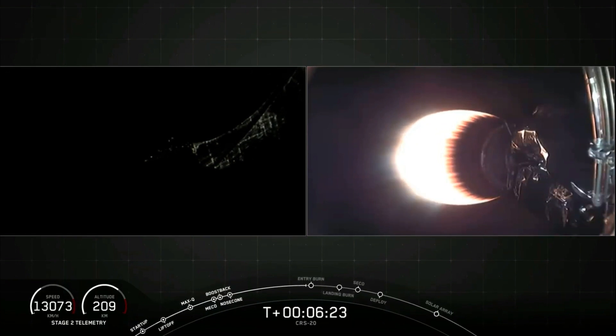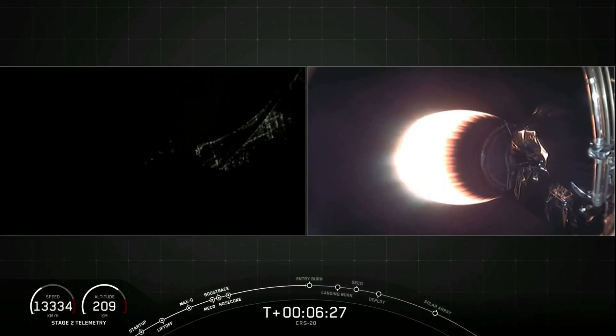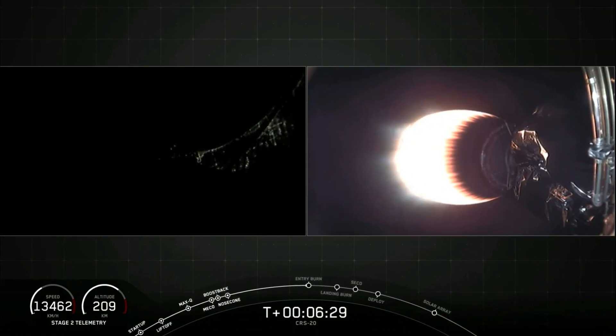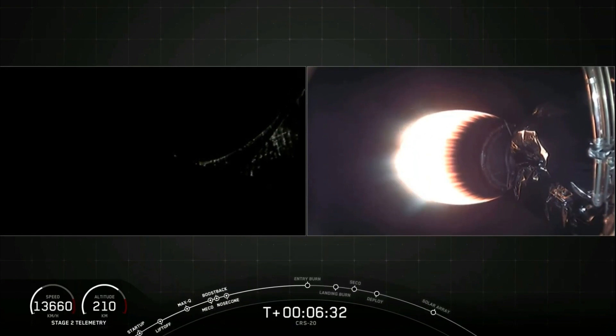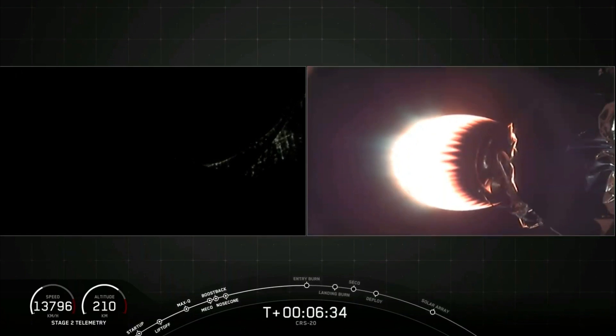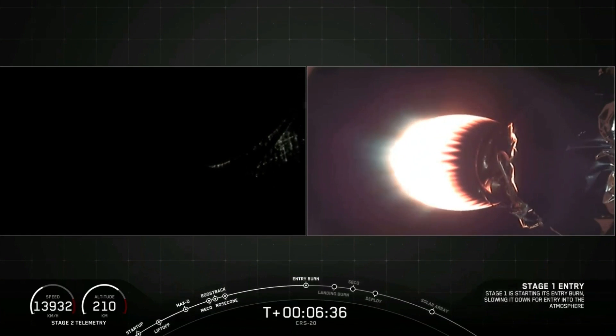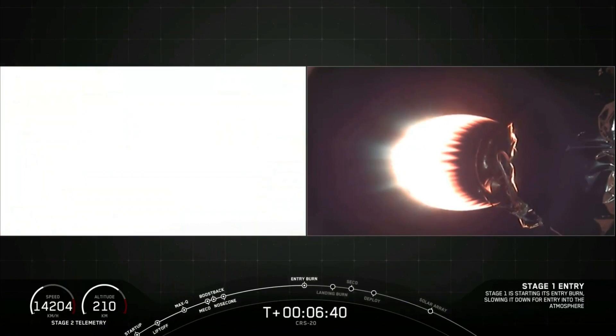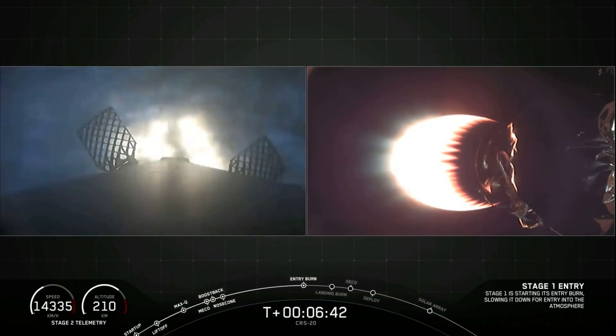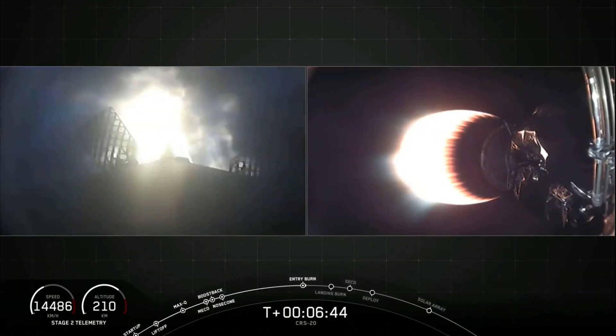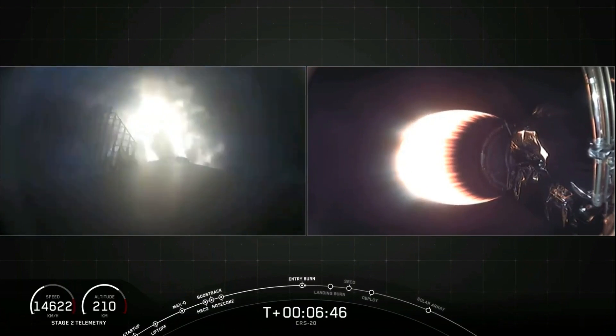So you can see on your left-hand screen, this is a view from the first stage. You can see Earth with all the lights lighting up the ground. Once that entry burn begins, we should be able to see that light up that screen on the left side. Stage one entry burn startup. And there it is, entry burn has started. This burn will last about 20 seconds long.